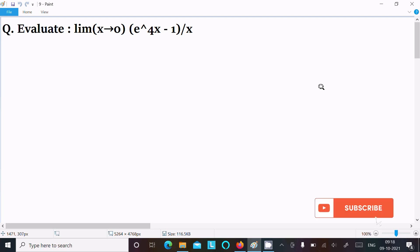In this video lecture, I am going to evaluate limit x tends to 0, e power 4x minus 1 divided by x. So let's see the answer. First, you are writing the given limit: x tends to 0, e power 4x minus 1 divided by x.